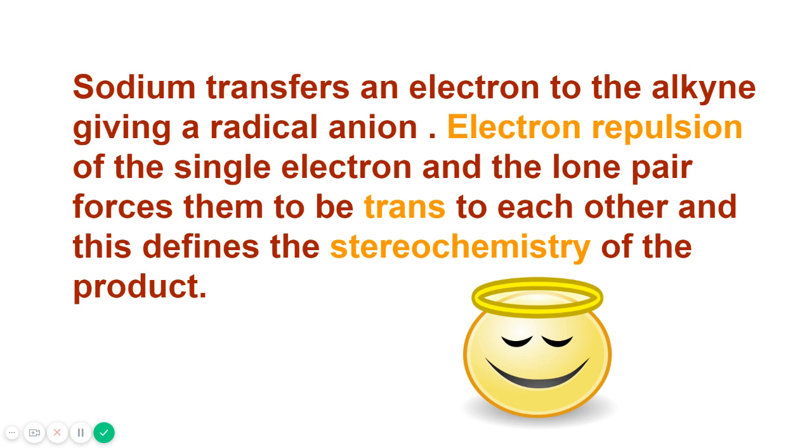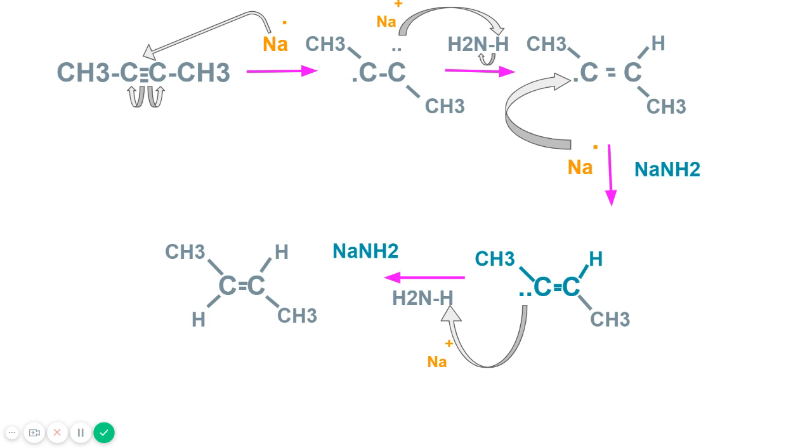Sodium transfers an electron to the alkyne giving a radical anion. As you can see here it transfers the electron here and gives a radical anion. This is radical and this is anion.